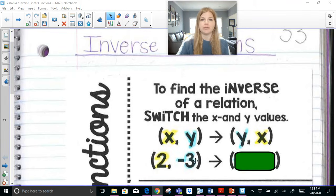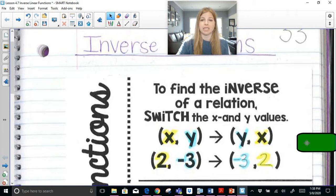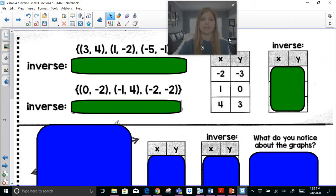So if I have (2, -3), the inverse would simply be (-3, 2). You just switch the x and the y. That's how simple it actually is.